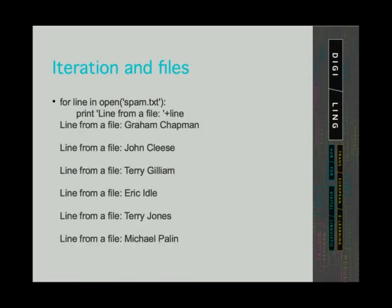To take the file spam.txt and iterate through the file, we write: for line in open('spam.txt'): then we can say print 'line from a file' and then the actual line. The program returns the text from the print statement and the line from the file.